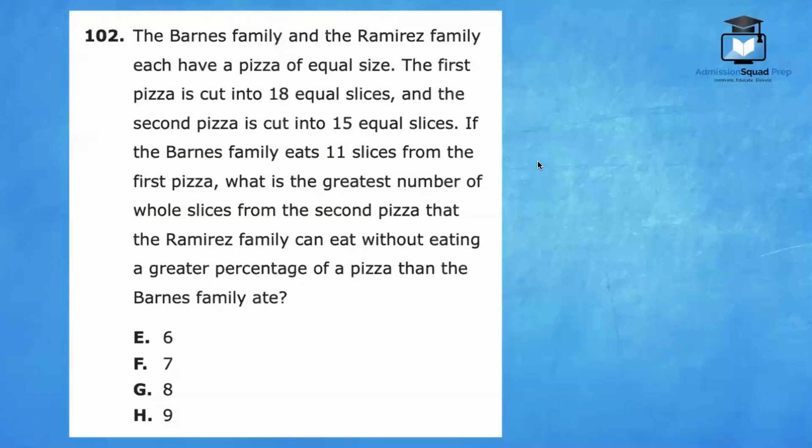Let's continue. Number 102. The Barnes family and the Ramirez family each have a pizza of equal size. The first pizza is cut into 18 equal slices, and the second pizza is cut into 15 equal slices. If the Barnes family eats 11 slices from the first pizza, what is the greatest number of whole slices from the second pizza that the Ramirez family can eat without eating a greater percentage of a pizza than the Barnes family ate? Let's determine the percentage of the pizza that the Barnes family ate. Since the Barnes family ate 11 out of 18 slices, we can convert this fraction into a percent.